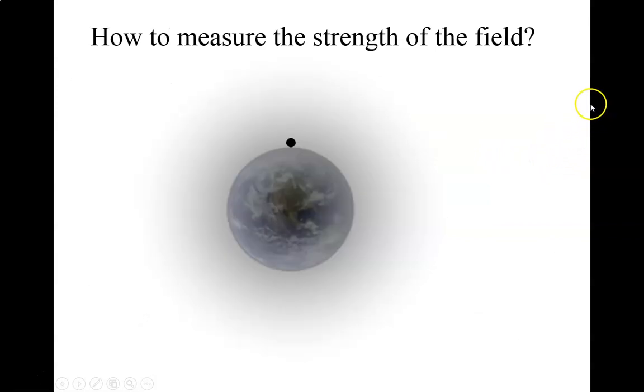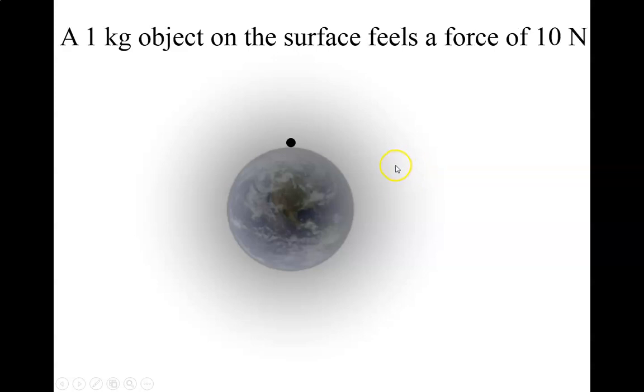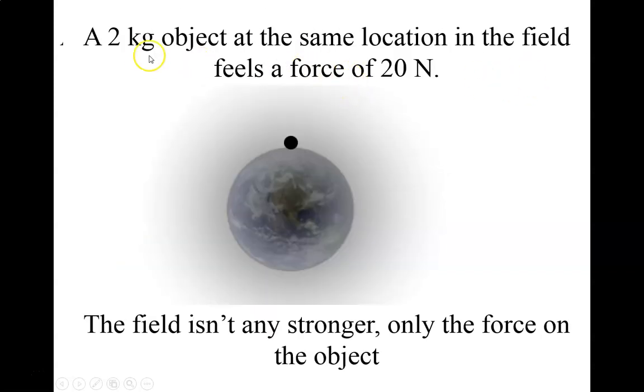Now, how are we going to measure the strength of the field? In physics, we like to measure things and have numbers that go along with things. Well, all we have to do is put an object in that field and measure the force acting on it. So, for example, a 1 kilogram object on the surface of the Earth feels a force of 9.8 newtons, or about 10 newtons. Now, a 2 kilogram object at that same location would feel twice the force. Twice the mass, twice the weight. But the thing is, the field didn't get any stronger because we're measuring the field strength at a location. We just have to use something to measure it with.